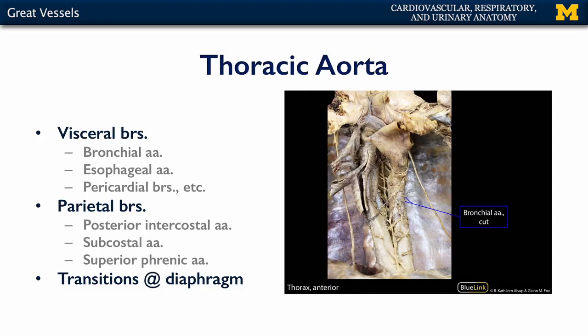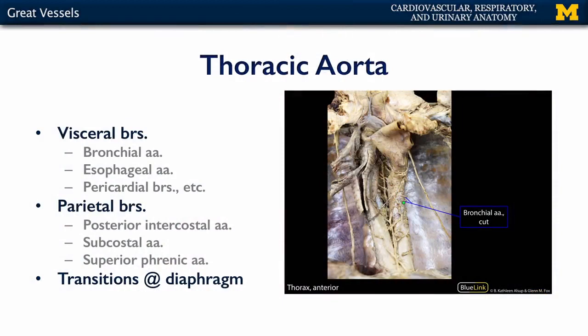Beyond the arch of the aorta, we have the thoracic aorta, which descends inferiorly to the diaphragm. There are several visceral branches — visceral branches supply blood to viscera. There are also many parietal branches to the thoracic aorta. Examples of visceral branches include bronchial arteries, which supply the bronchi of the lungs; esophageal arteries, which supply the esophagus; and pericardial branches to supply the pericardium.